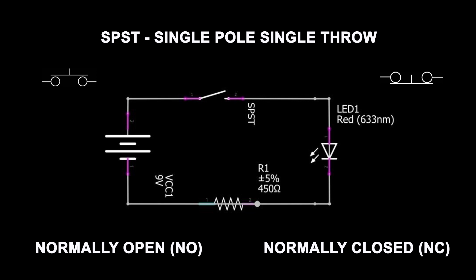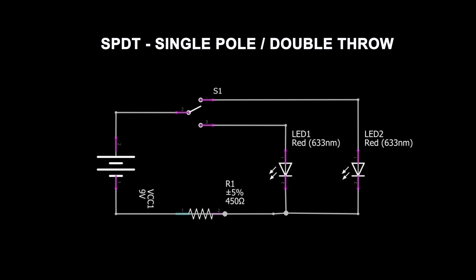Now let's move on to the single pole double throw switch, or SPDT. This switch has three terminals: one input contact and two output contacts. The input contact is the pole and the two output contacts are the throws. These can be used in a variety of ways — you might want the switch to change over the connection from one input to two choices of outputs, or you might leave one side open to use it as a single pole single throw. It's quite a versatile component.